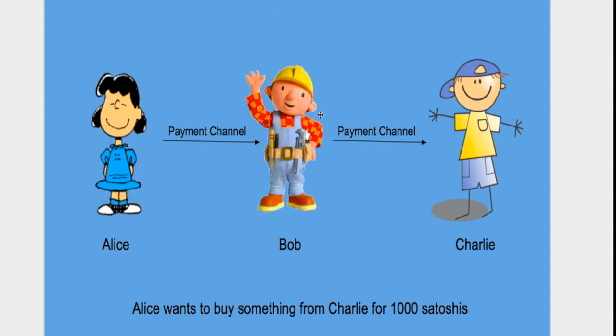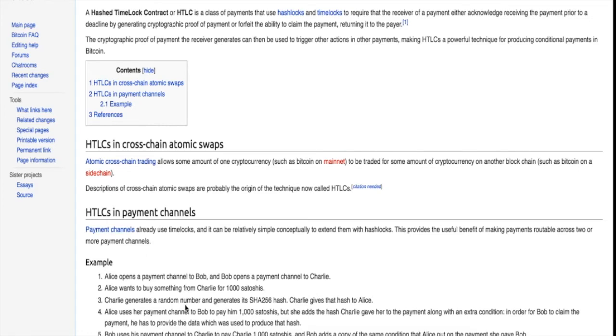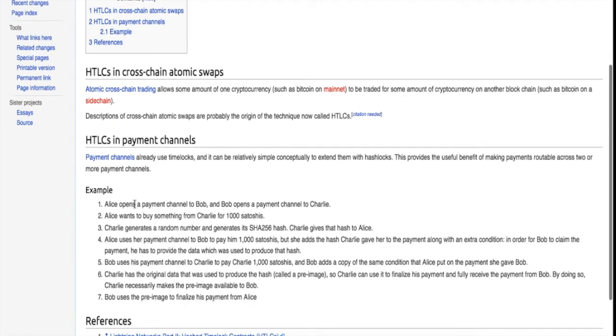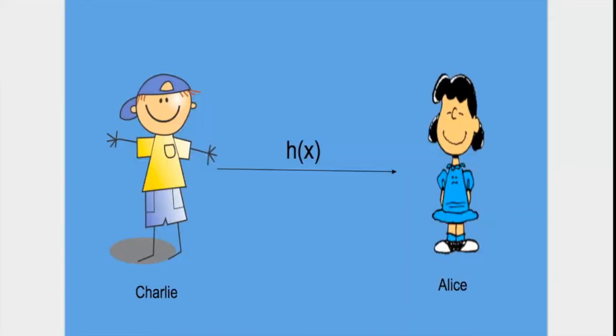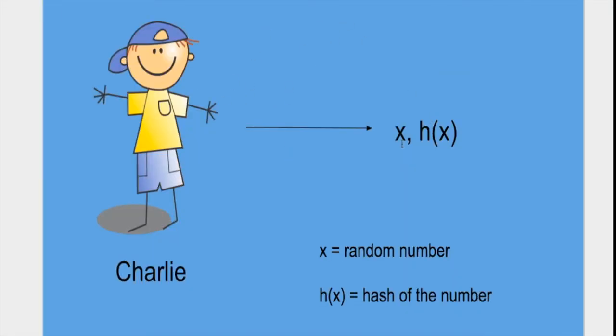Charlie generates a random number X and generates the SHA-256 hash H(X). Charlie gives that hash H(X) to Alice.